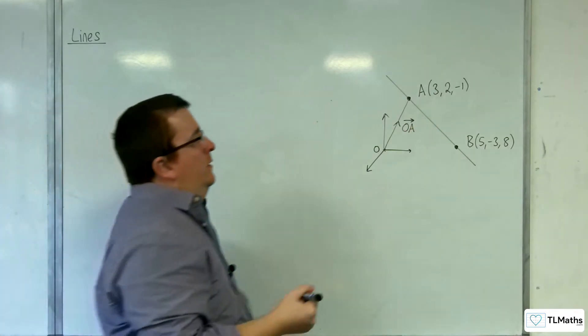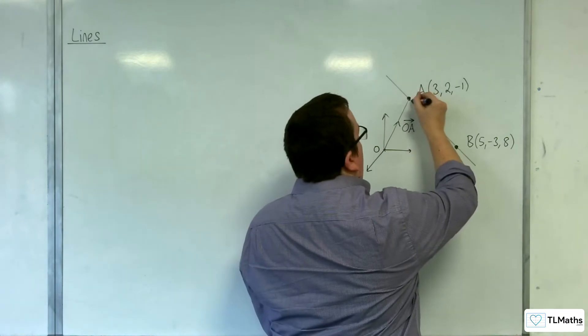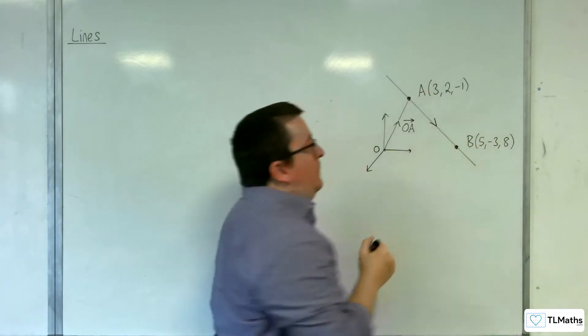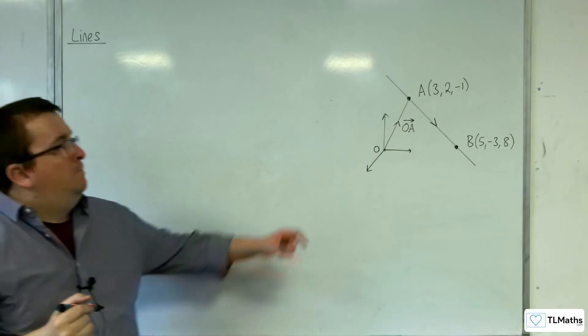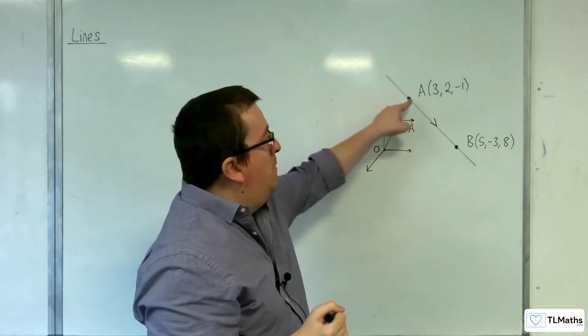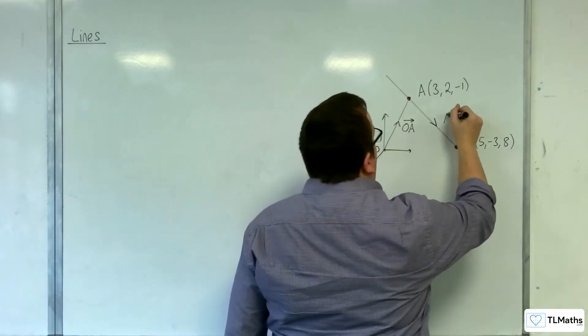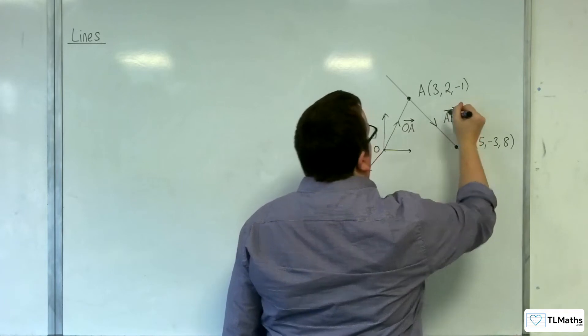And then I will find the vector AB because that will point me in the right direction. And then I can use multiples of AB to get me to any point that is on the line.